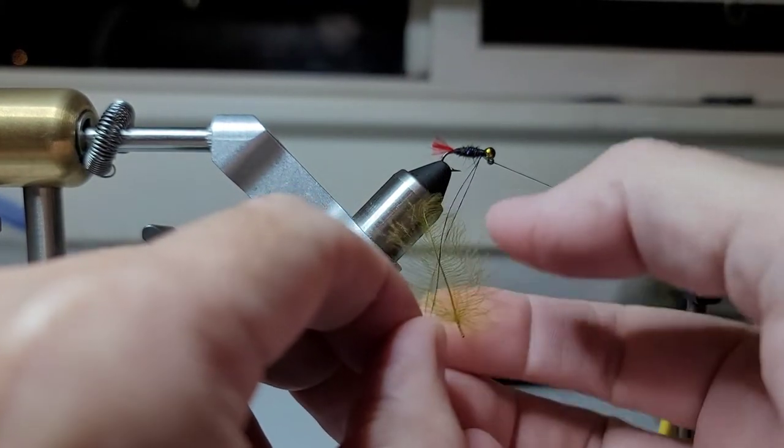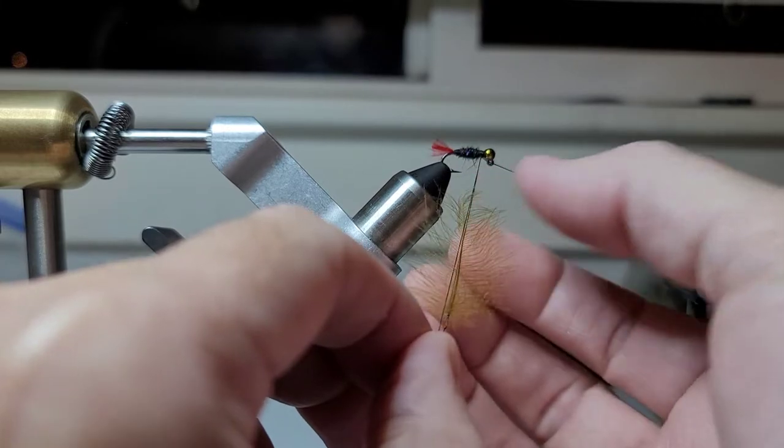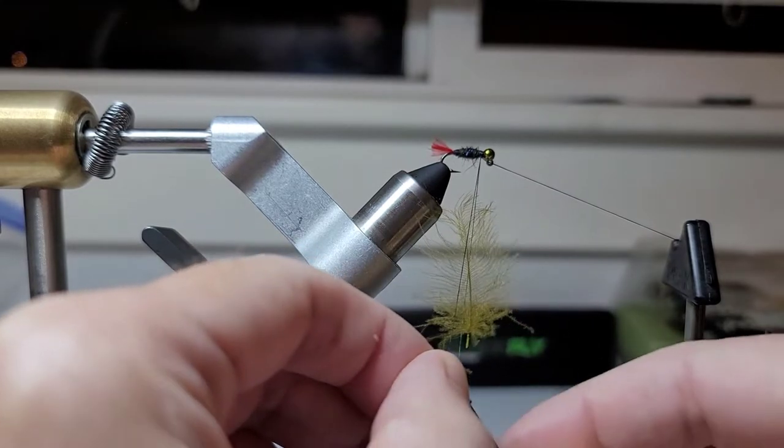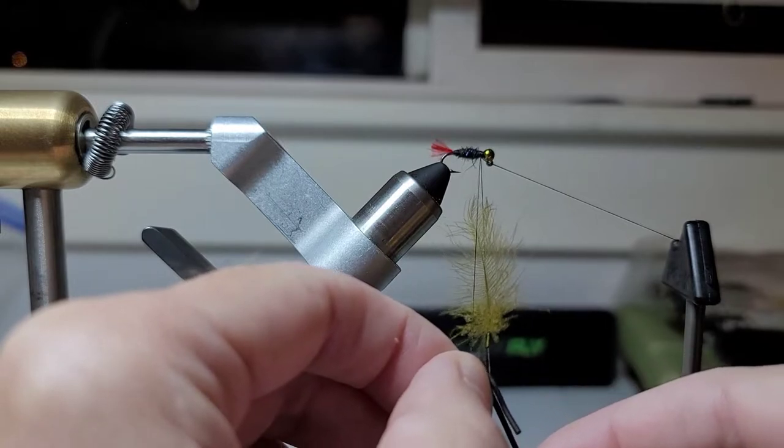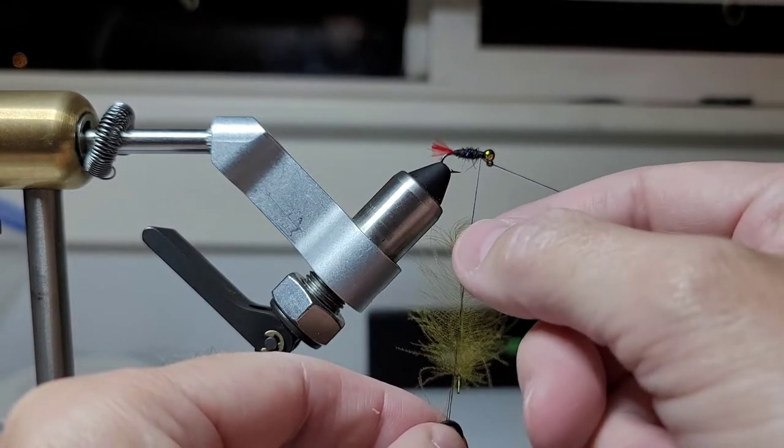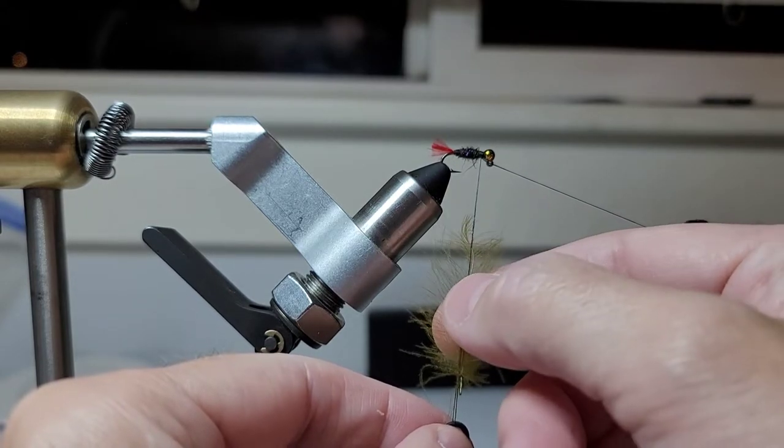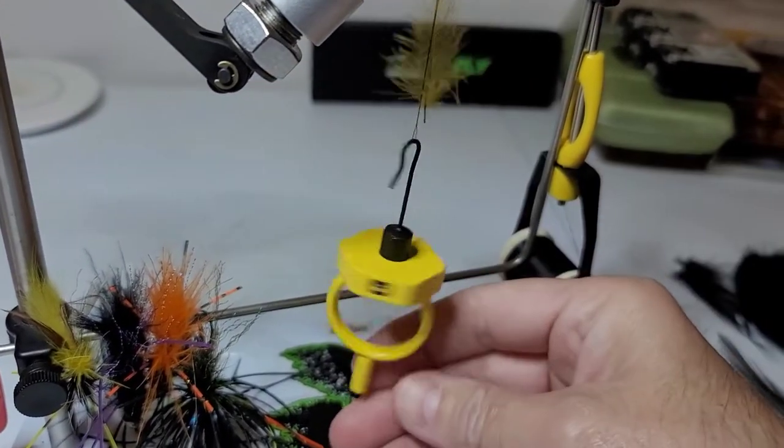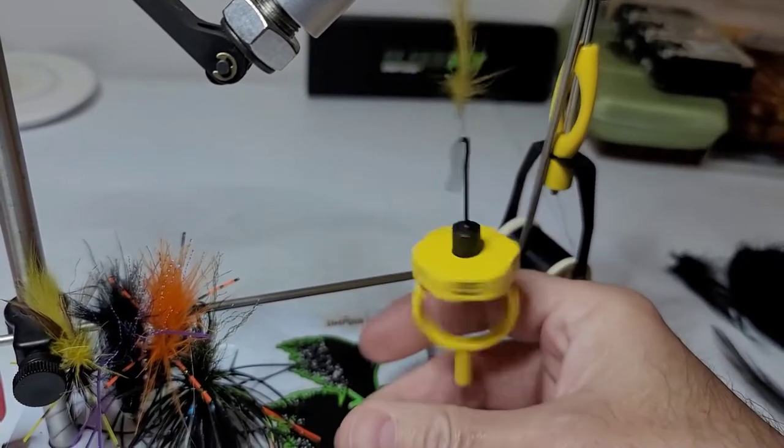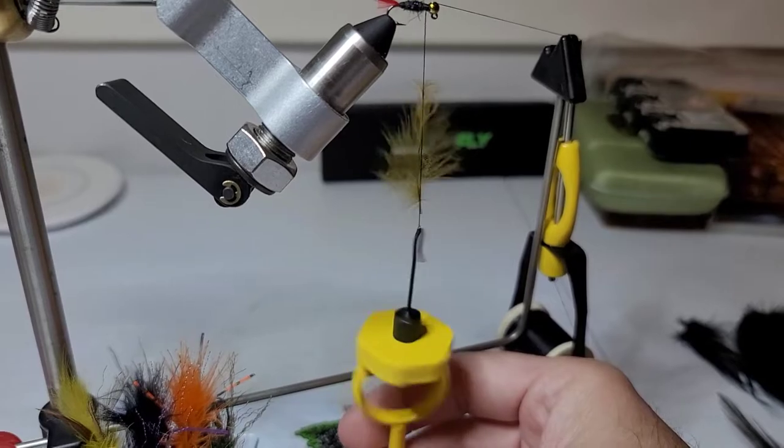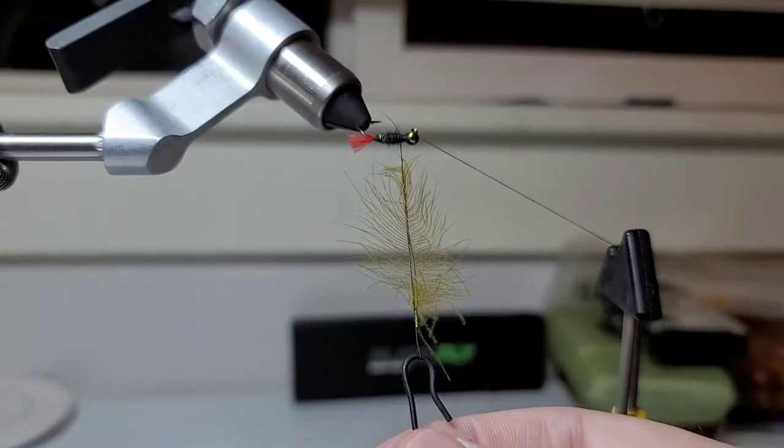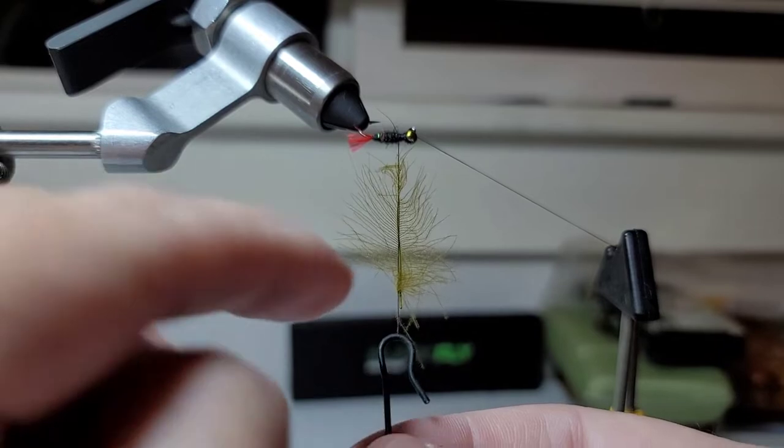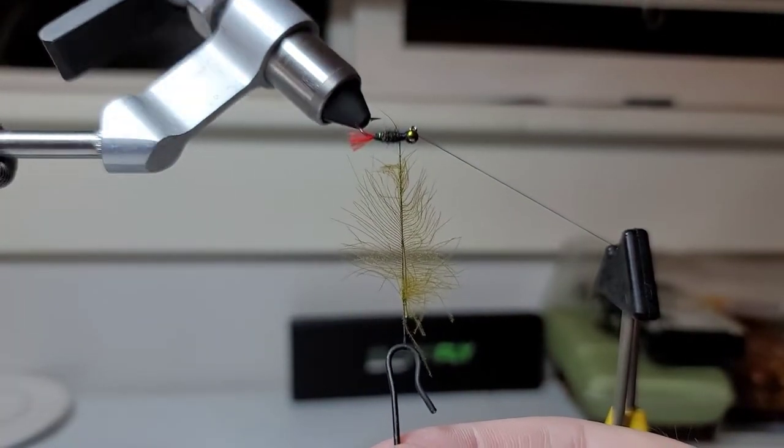The CDC is pretty delicate. You want to get the stem as close to center as possible. See what I'm doing here? I'm just going to spin this. So what I'm doing is I took the weight off of the hackle tool and just kind of making sure that stem stays tight to the center of the dubbing loop.